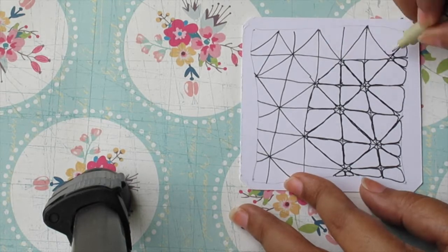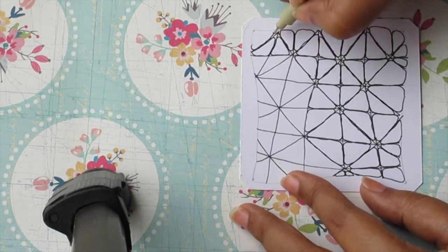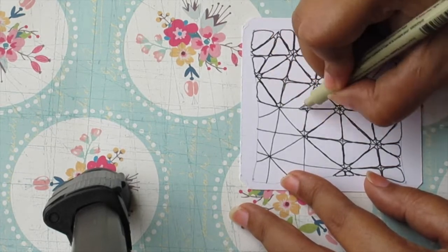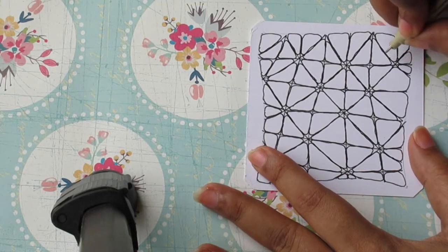And we'll fill the whole tile with these rounded curved triangles. Notice how the rounded edges are actually creating gaps, circular kind of gaps between the triangles.